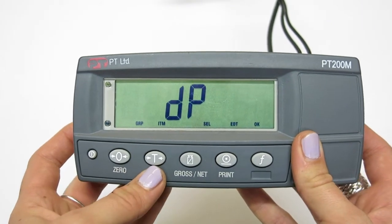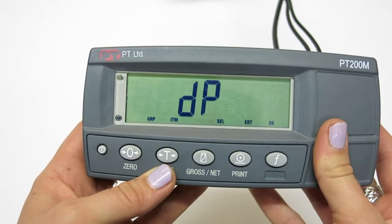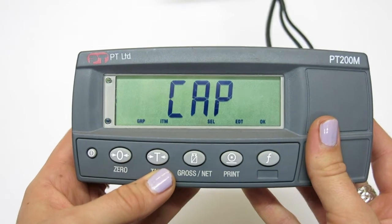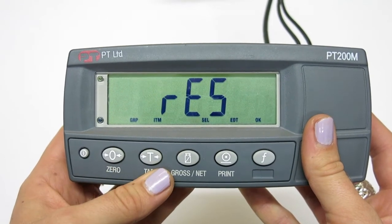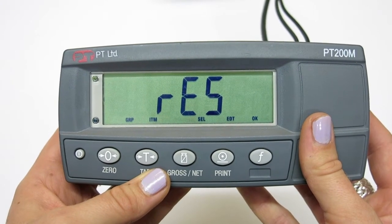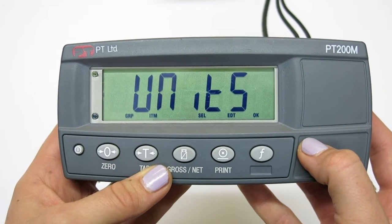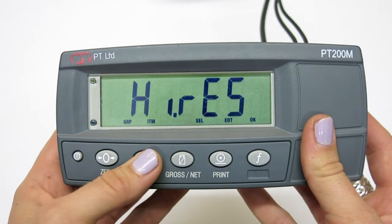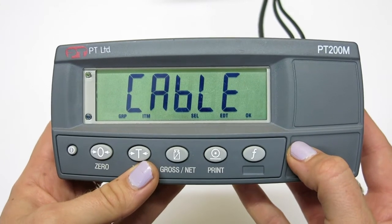Using the tare key to navigate, we have the options: DP which stands for decimal point position, CAP which stands for maximum capacity value, RES which is the resolution, the step number that the indicator counts by, UNITS is the units that you wish to measure the weight in, the option of high resolution or not, and Cable depending if you are using a 4 or 6 wire mode.